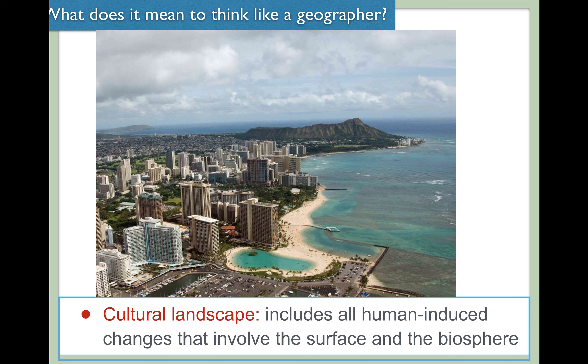Looking at the image, we see the natural — the mountain range, the beach area. But all of the different buildings, road systems, boats, and the way the land has been landscaped in the bottom section of the picture — all of those are man-made modifications, all of those are part of the cultural landscape. So consider the term 'culture' here as being in reference to human action.